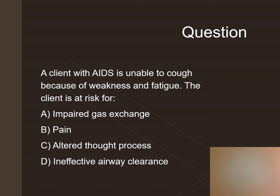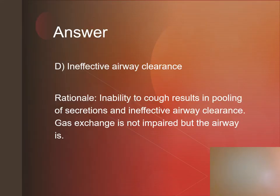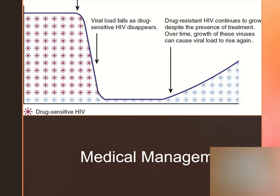A client with AIDS who is unable to cough because of weakness and fatigue is at risk for ineffective airway clearance. To manage HIV and AIDS, we administer antiretroviral drug therapy, which targets viral enzymes, and a highly active antiretroviral therapy called HAART.